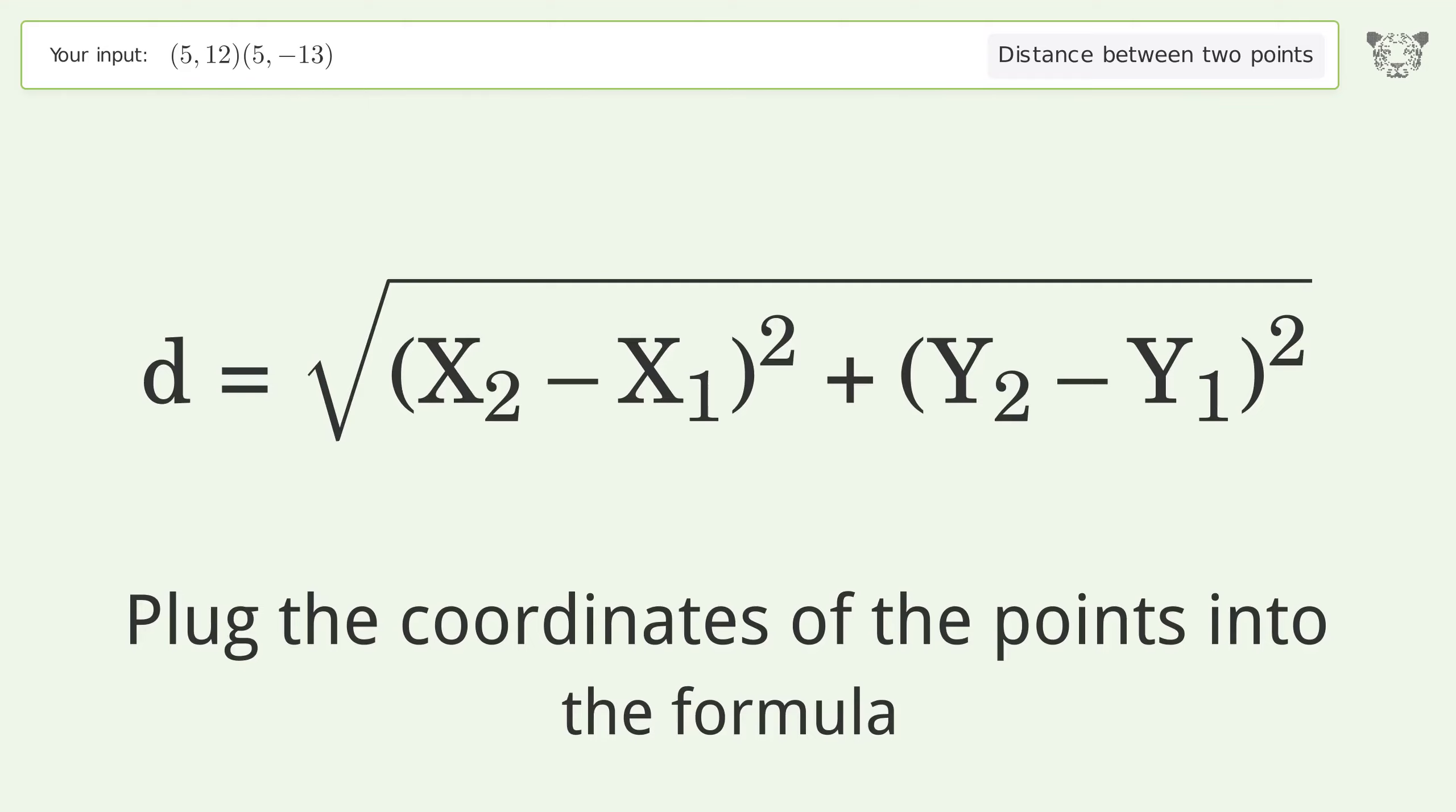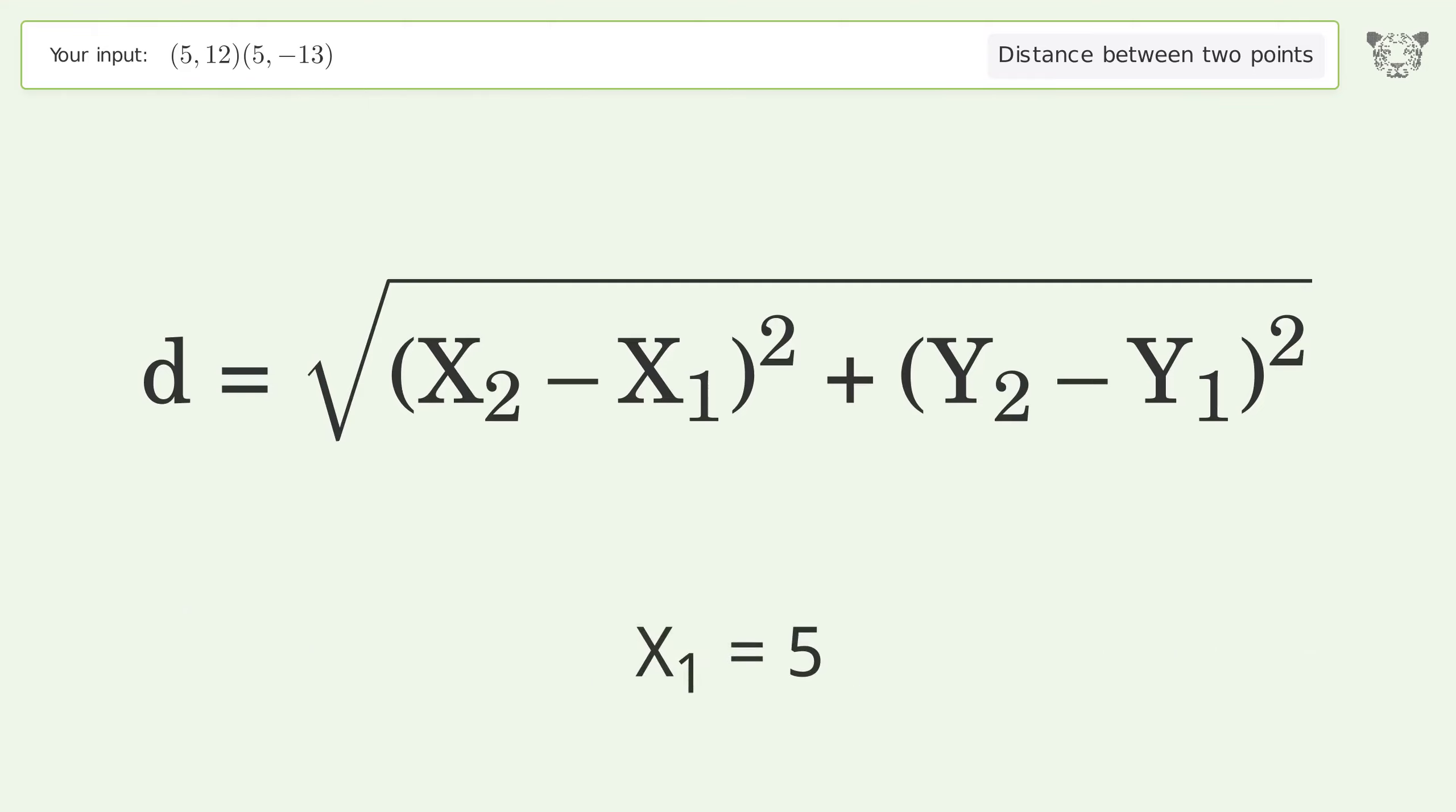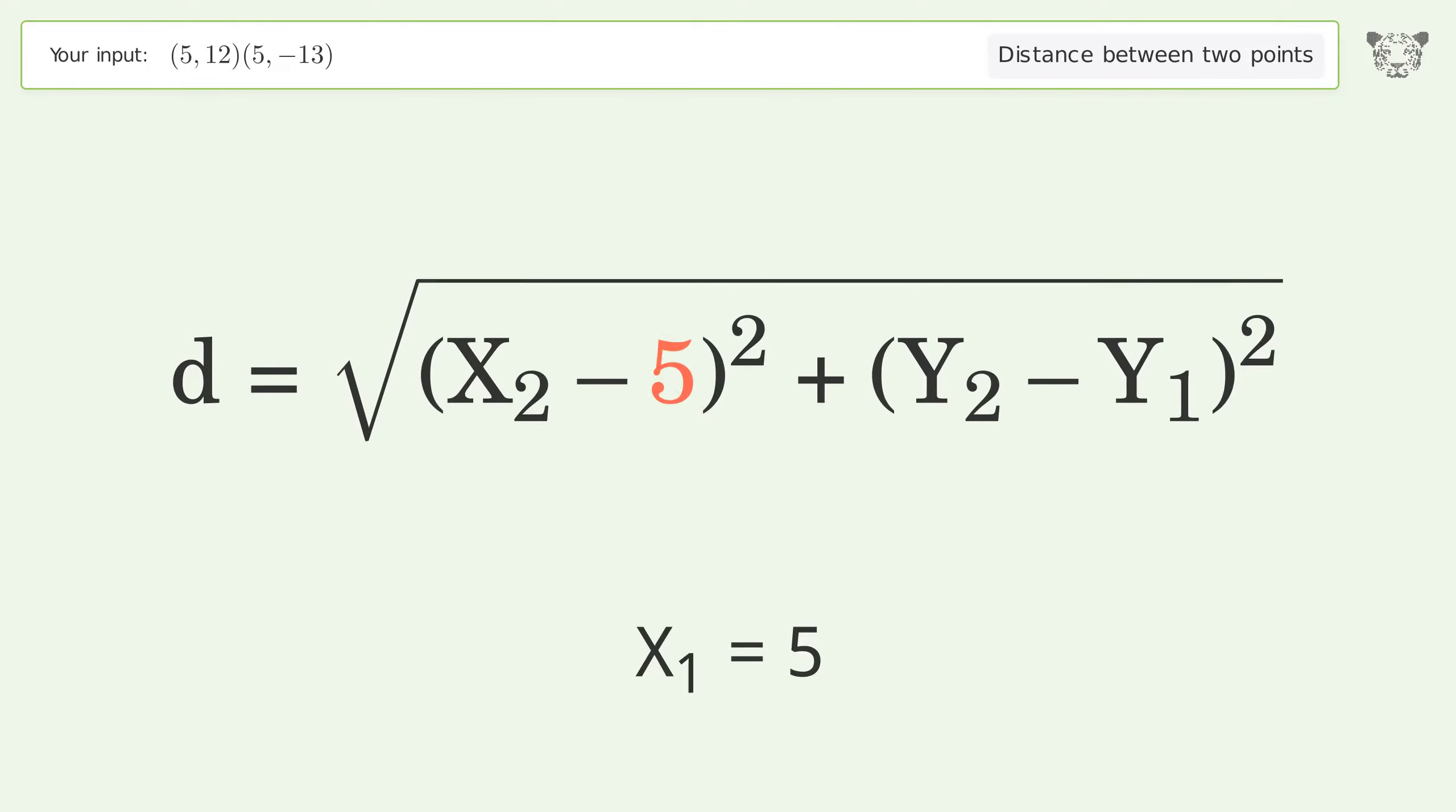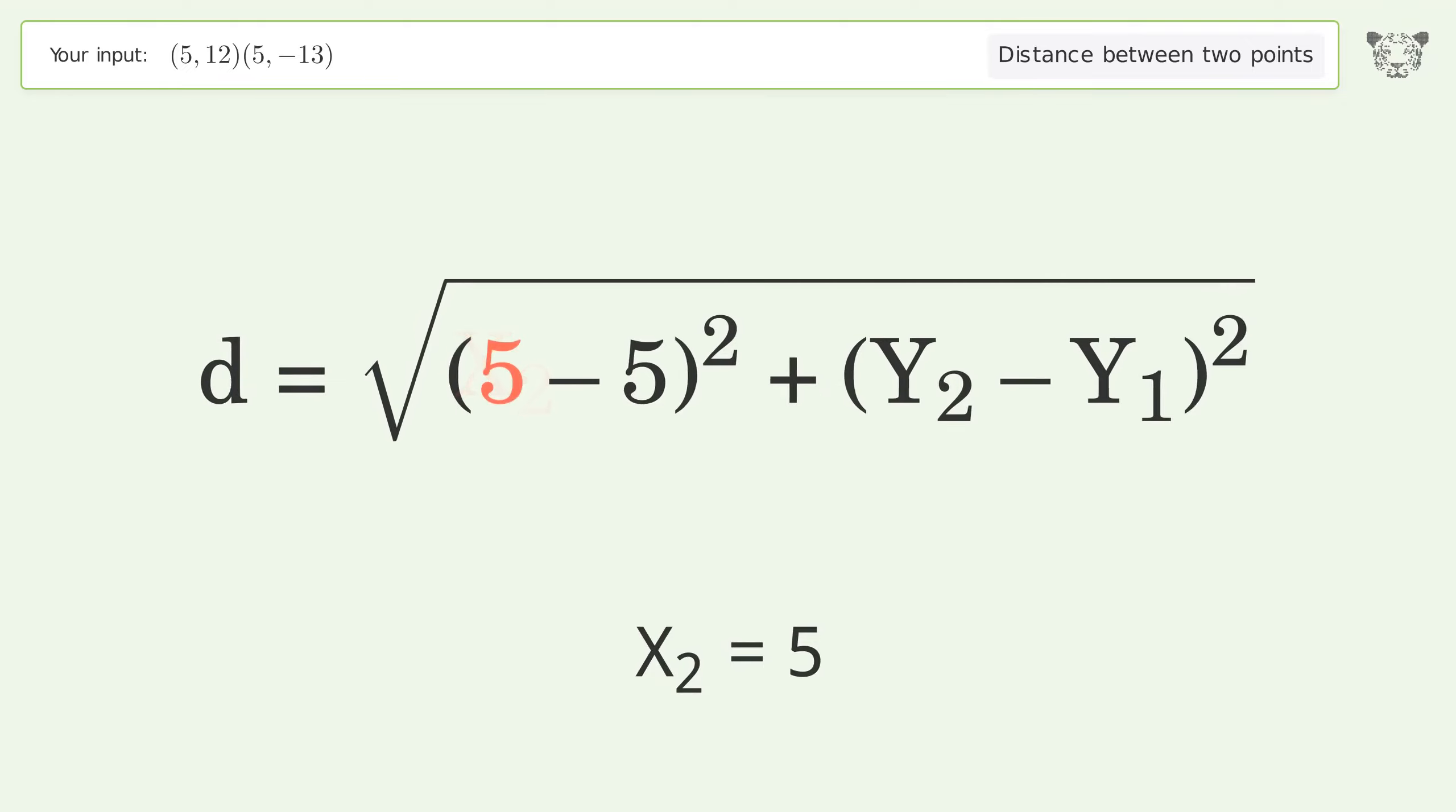Plug the coordinates of the points into the formula. x1 equals 5, x2 equals 5, y1 equals 12, y2 equals negative 13.